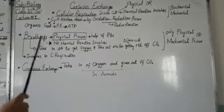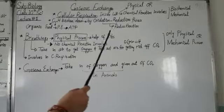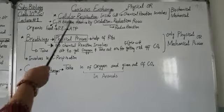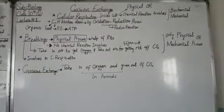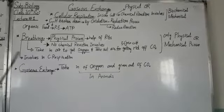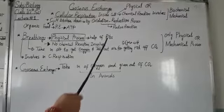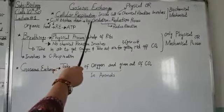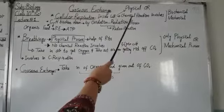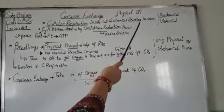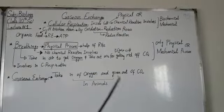Now we will see the differences between cellular respiration and breathing. Cellular respiration is a process that occurs in cells. Breathing is a physical process involving our body — our ribs, diaphragm, and lungs. Breathing is a physical and mechanical phenomenon, while cellular respiration is a chemical process.